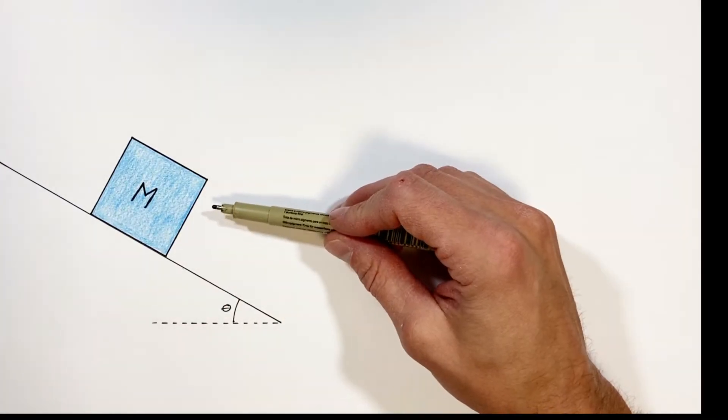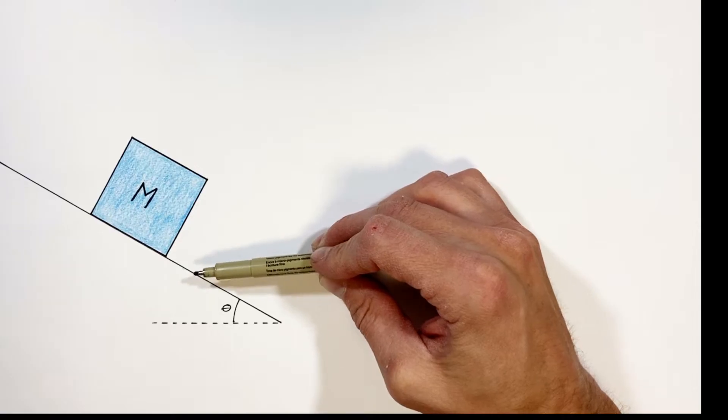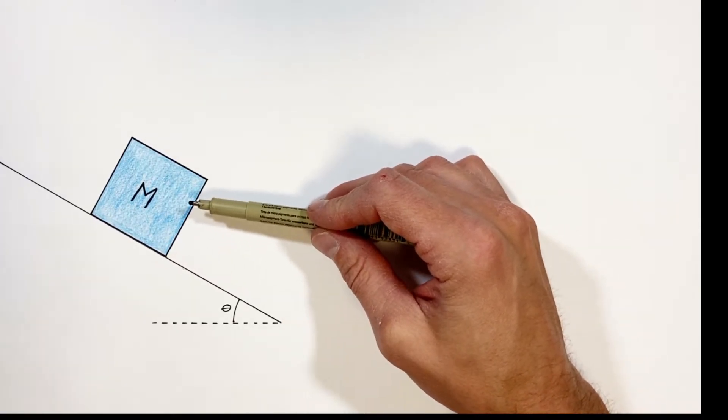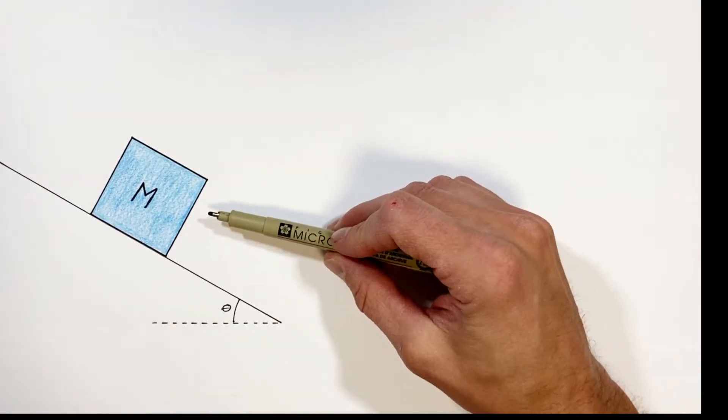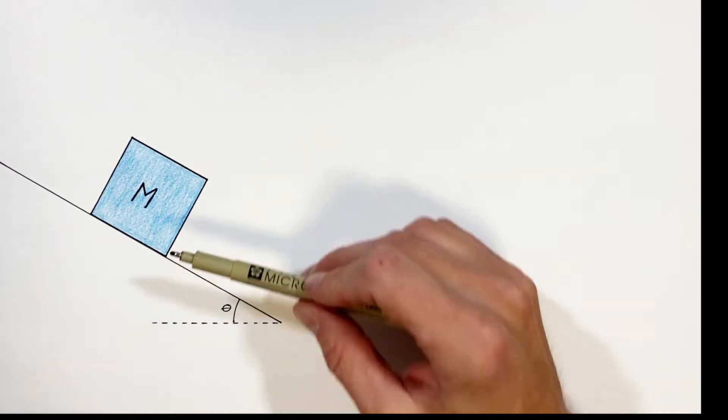And today I want to go through and derive an equation for the critical angle of this block against the hill as a function of the coefficients of friction and any other variables that might play a role in this problem. So to get a better understanding of what's going on in this problem, we need to draw a free body diagram for a block on the hill.